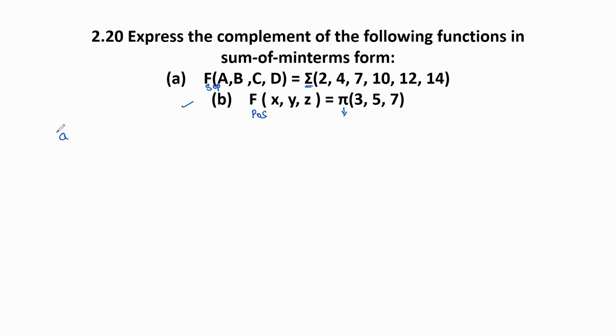Now let us start with the first part. The given Boolean function is f(A,B,C,D) = Σ(2,4,7,10,12,14). Here the largest value is 14. The equivalent binary for 14 based on binary bits 1,2,4,8 is 1110. Four bits are required to represent 14 in binary form.